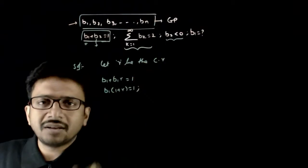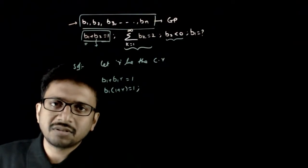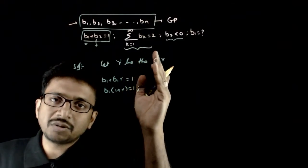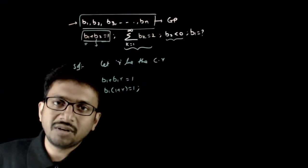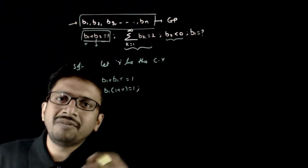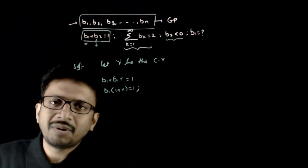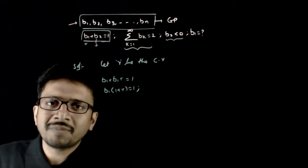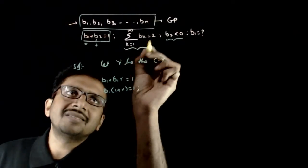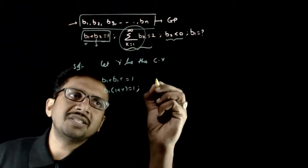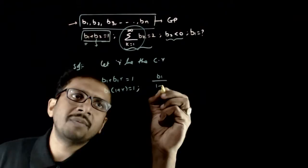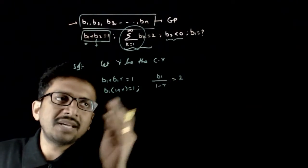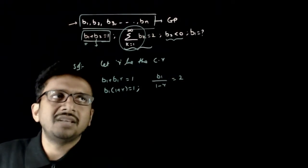The second piece of information is that the sum of infinite terms starting from b1, b2, b3 and so on equals 2. The sum up to infinite terms is a divided by (1 minus r). So this expression is b1 divided by (1 minus r) equals 2. So we have: b1(1 + r) = 1 and b1/(1 − r) = 2.